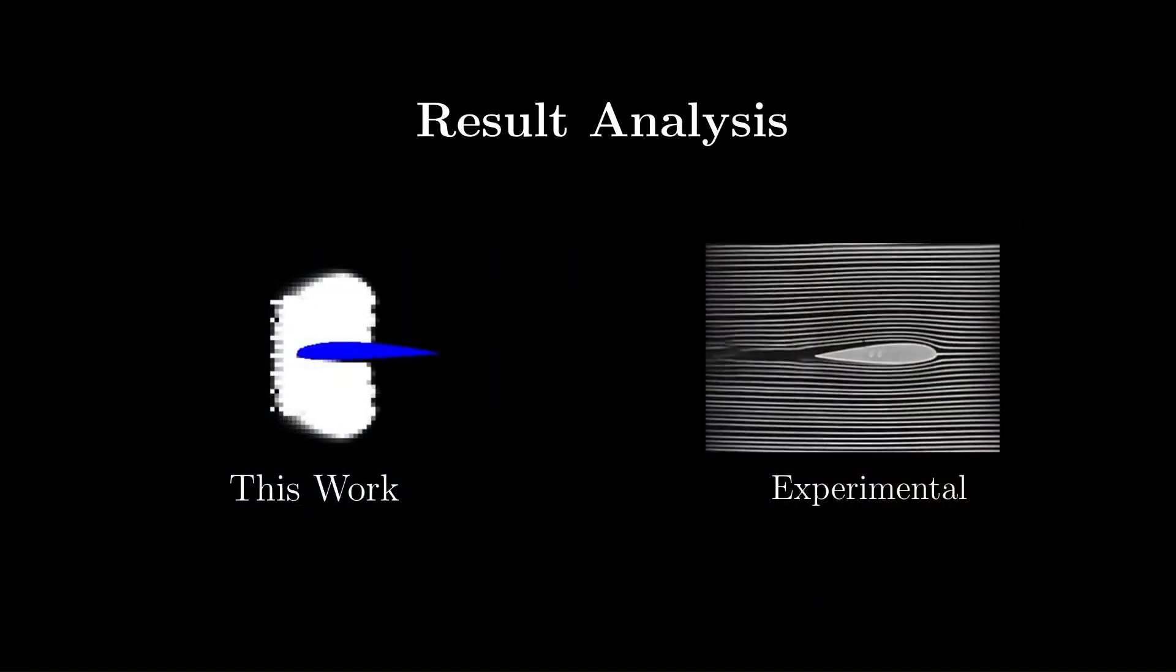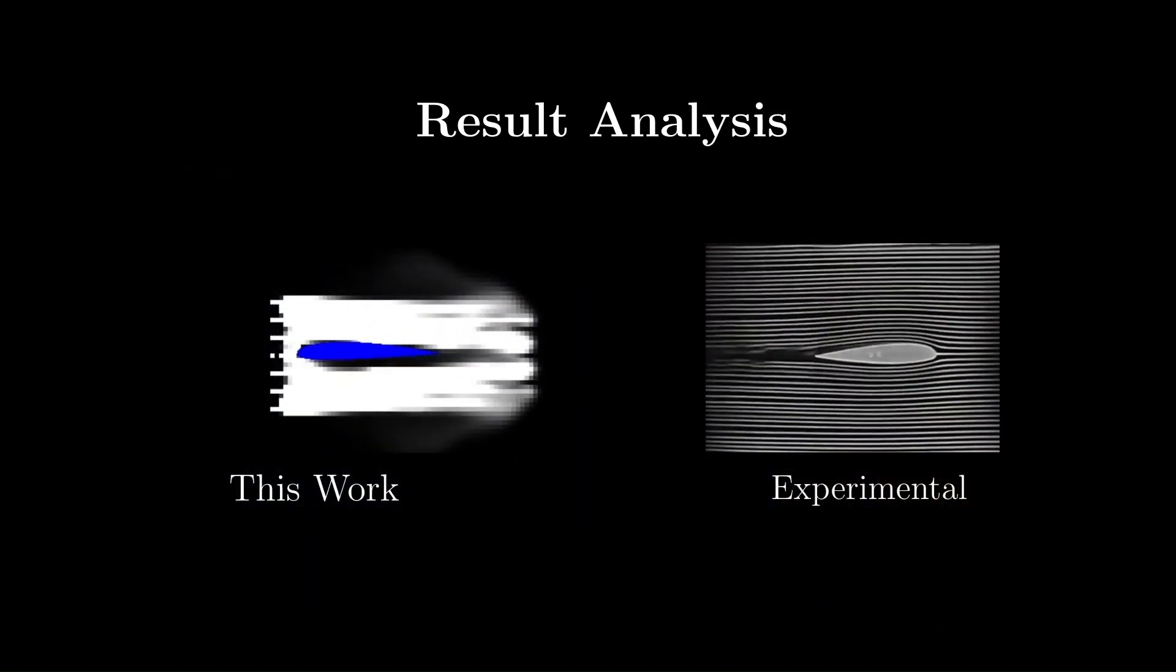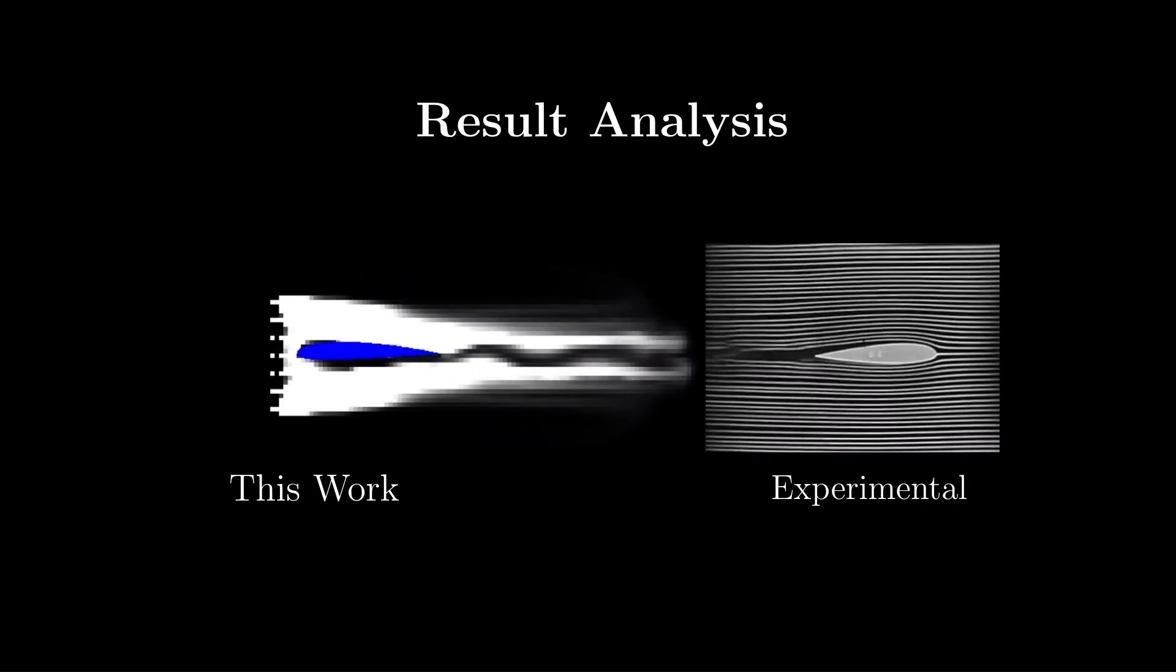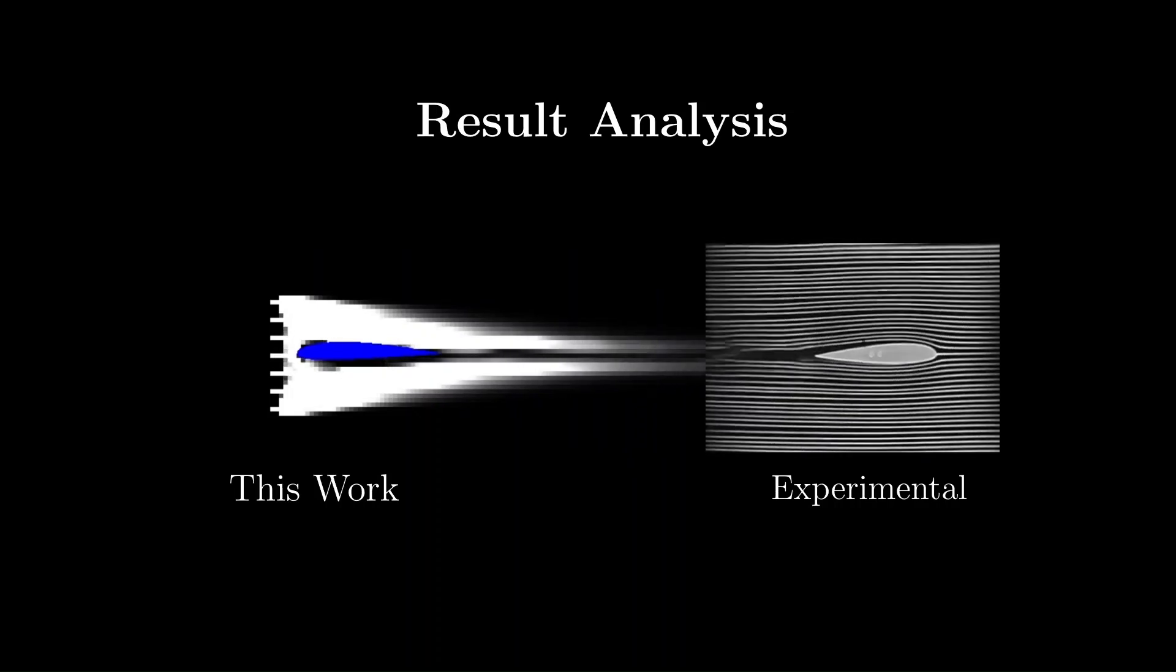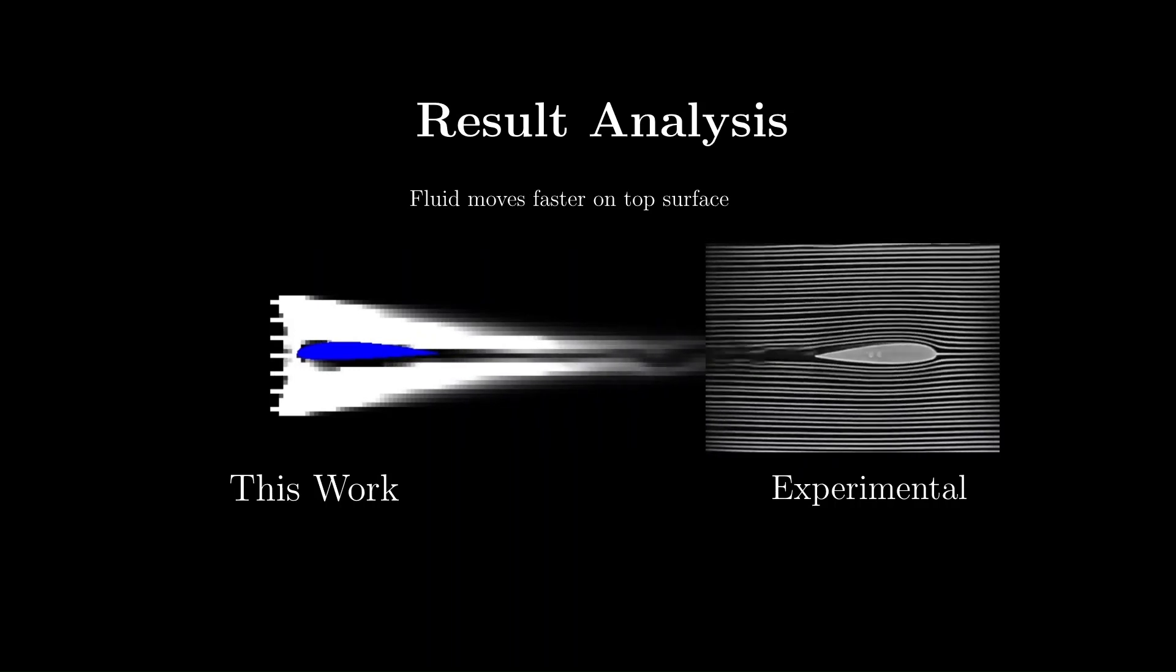In the following scenario, we add a horizontal density source and position an airfoil as a barrier. The resulting flow closely mimics what is observed when an airfoil is tested in a real wind tunnel. Notice how the fluid adheres to the contour of the airfoil along its length. On the top surface, the fluid flows faster than the bottom due to the narrowing effects near the airfoil's nose, known as the pinch point.